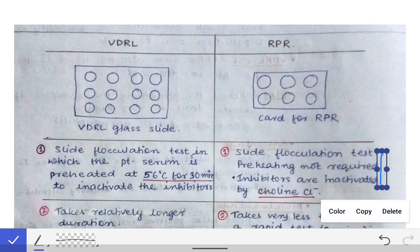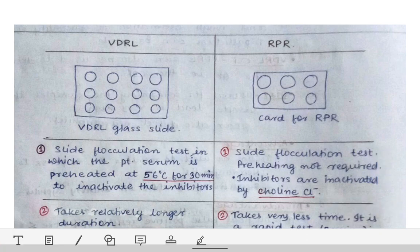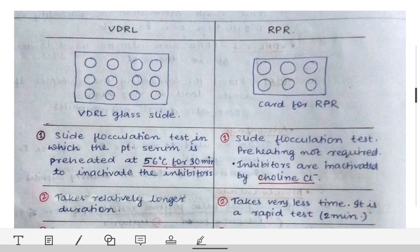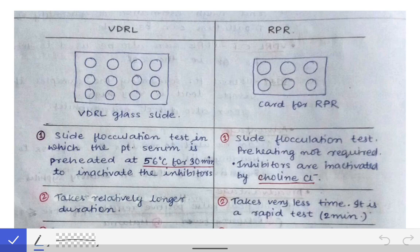We will see the difference between the VDRL and RPR, which is a very important and commonly asked exam topic. VDRL stands for Venereal Disease Research Laboratory, while RPR stands for Rapid Plasma Reagin test. Both of these are non-specific tests, also called non-treponemal tests.